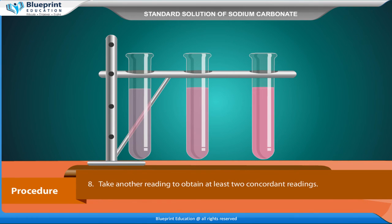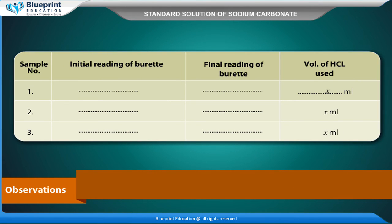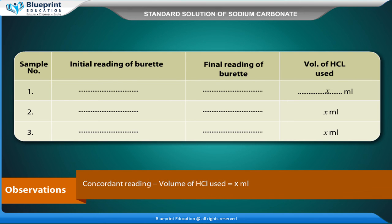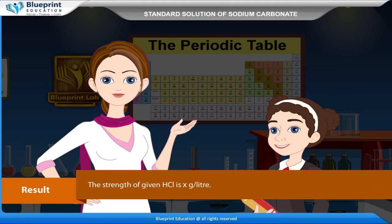Take another reading to obtain at least 2 concordant readings. Observations — Sample number, initial reading of burette, final reading of burette, volume of HCl used: X ml, X ml, X ml. Volume of Na2CO3 taken for each is equal to 10 ml. Concordant reading: volume of HCl used is equal to X ml.